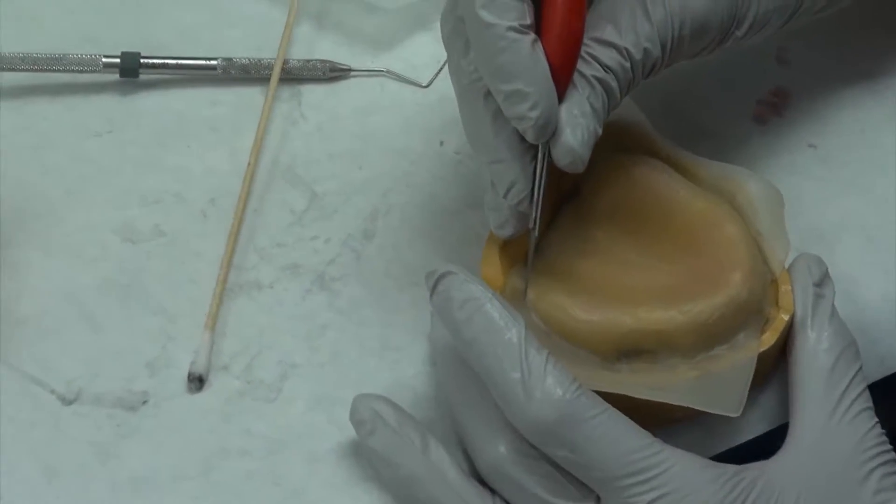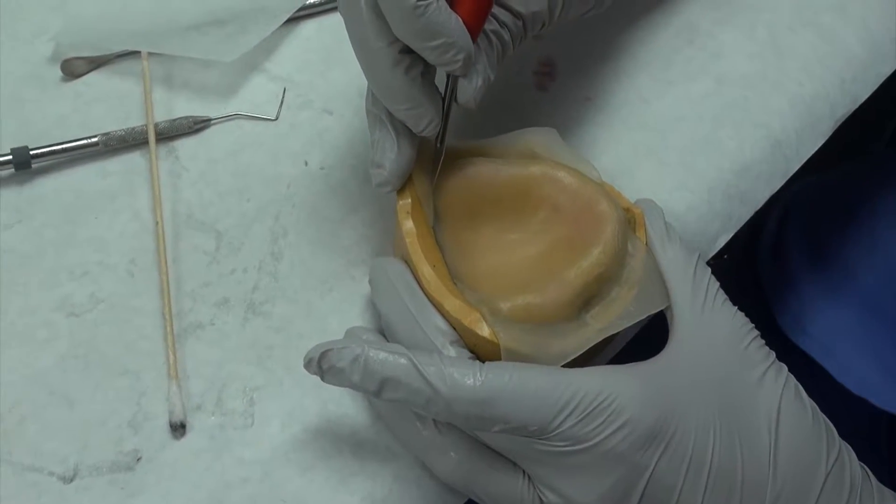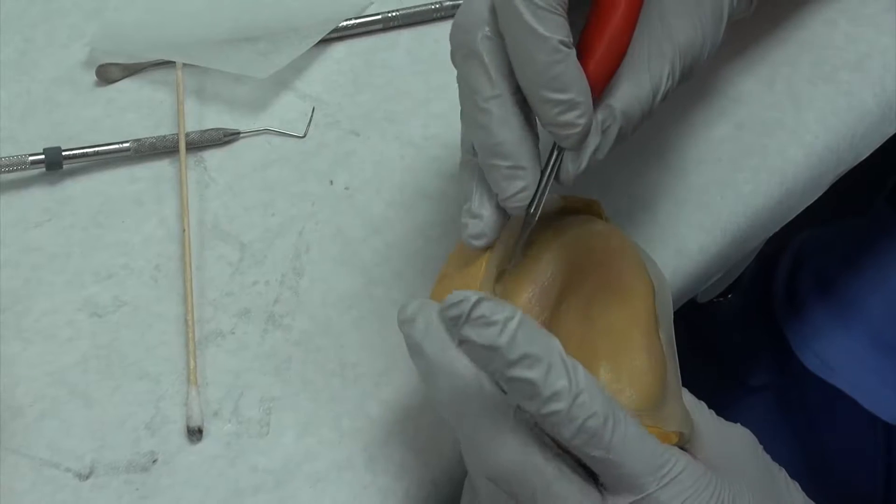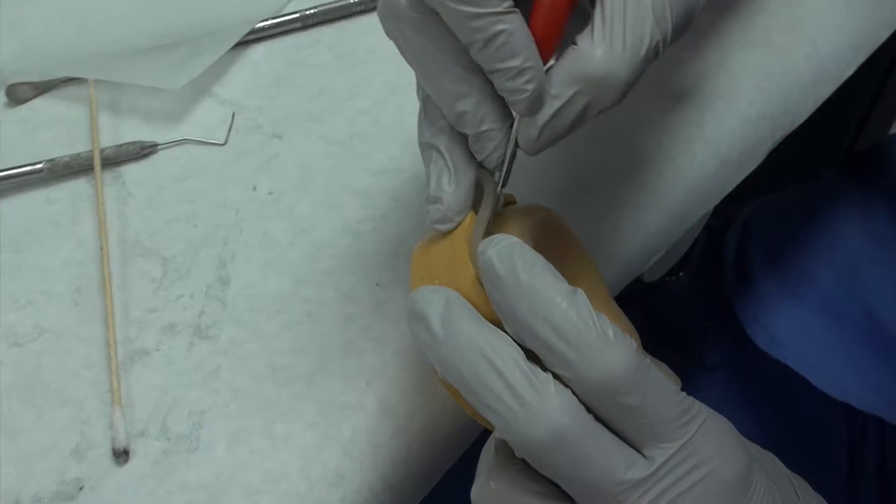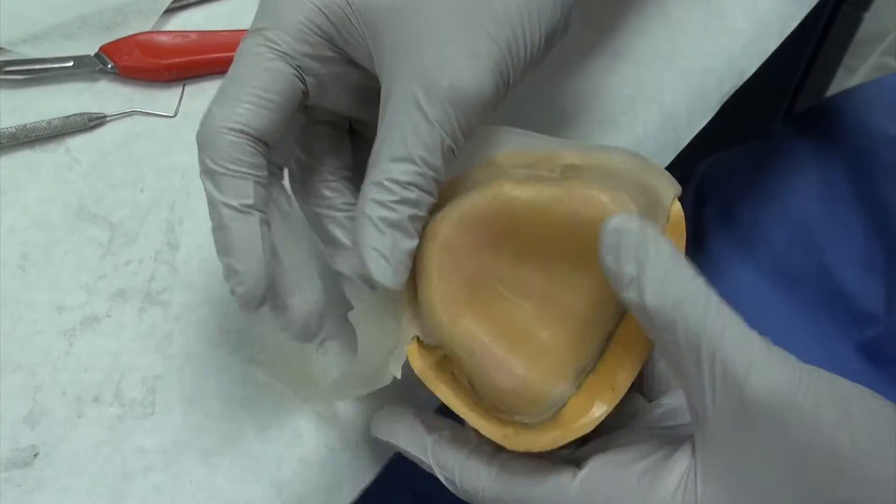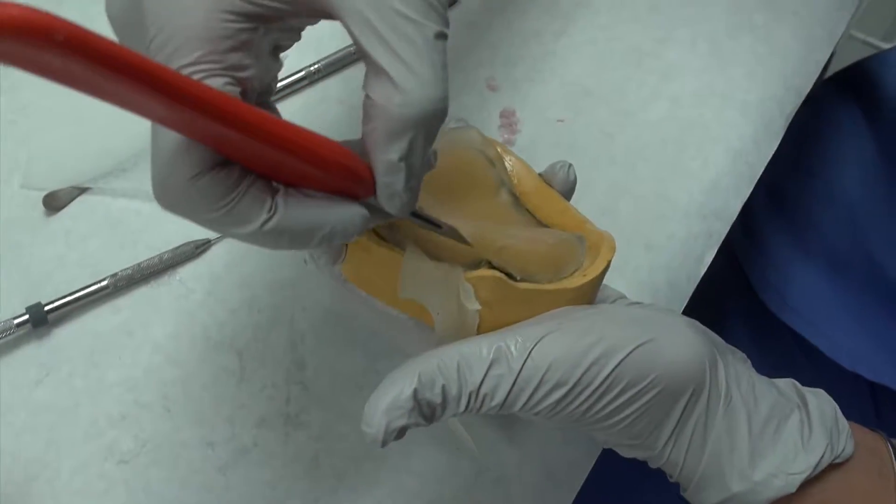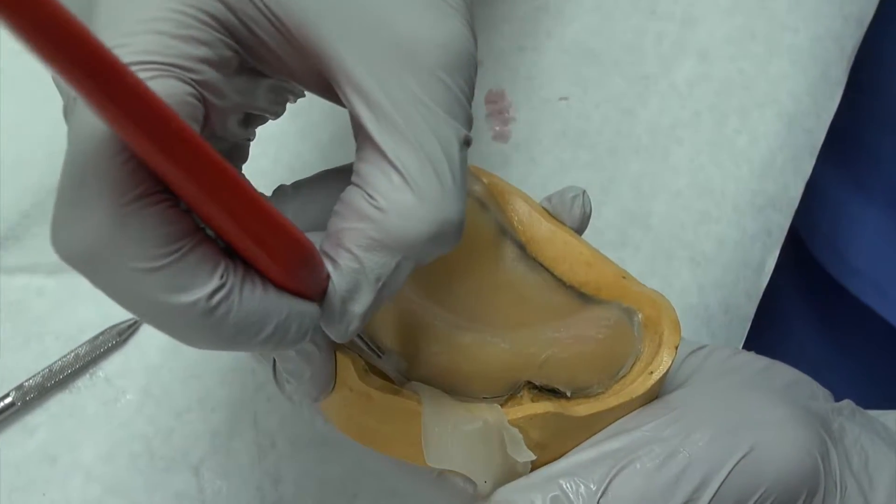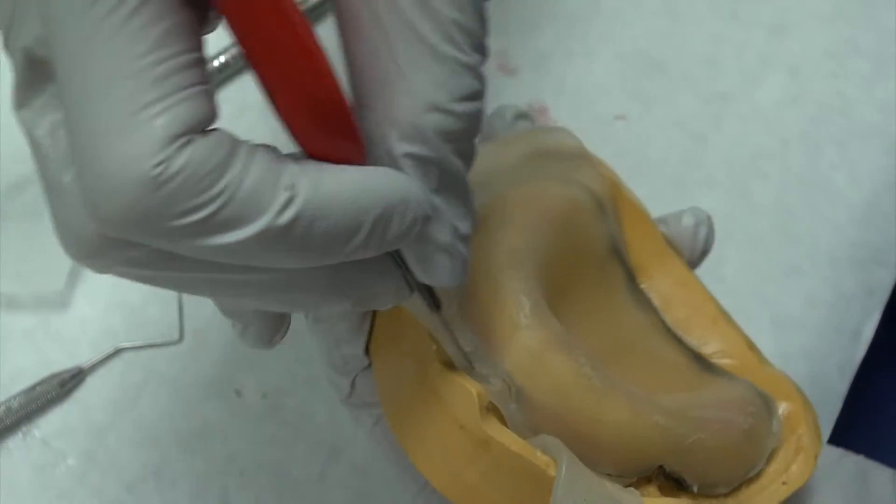Now going just on the external surface. As you trim, you'll be able to get closer to your line. Try not to lift it up too much because you can incorporate air bubbles. And I'm just gliding, following the frenula.